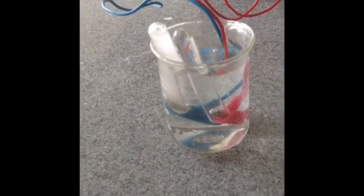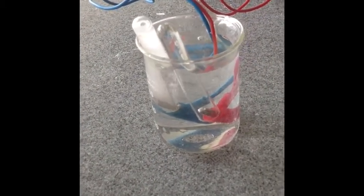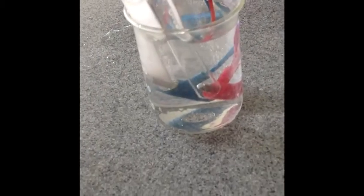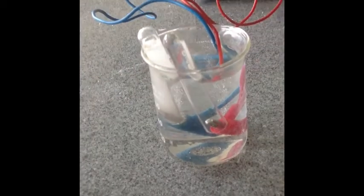You can see gas formation beginning to form around the negatively charged electrode because the oxygen is positively charged ions.